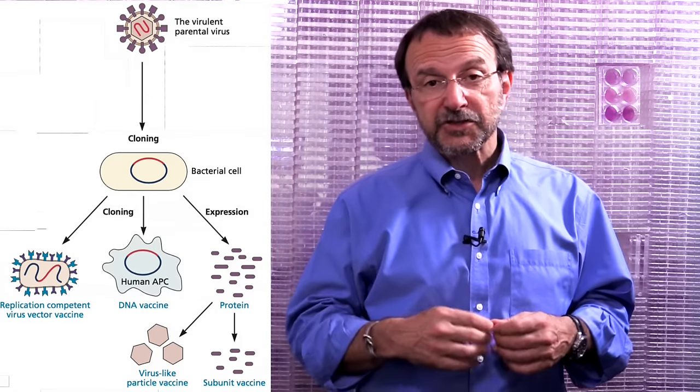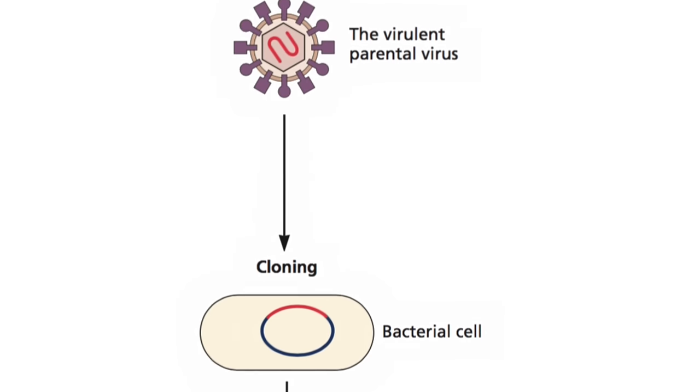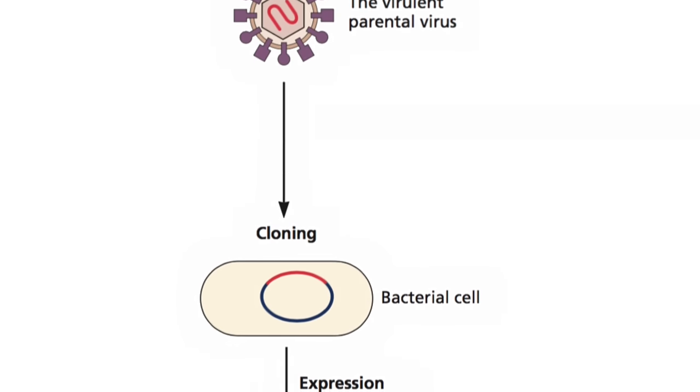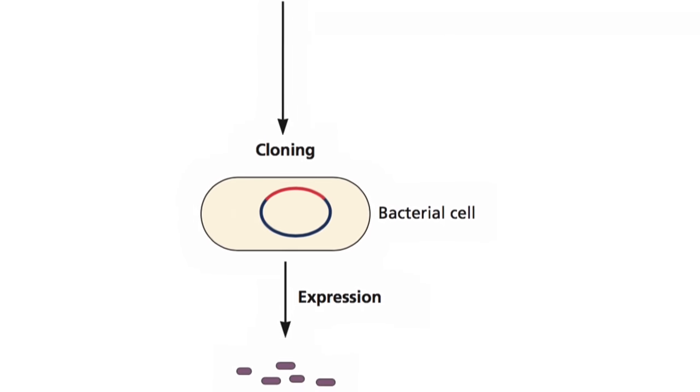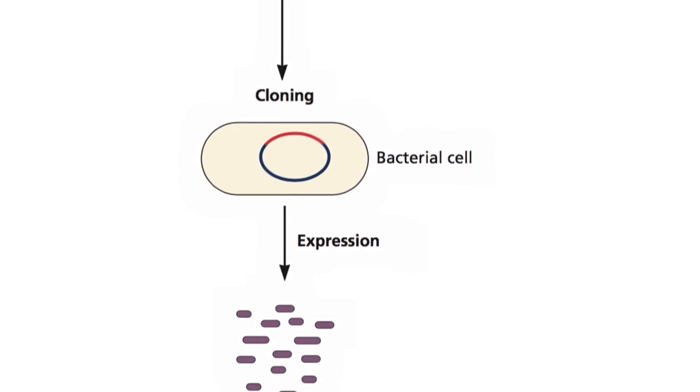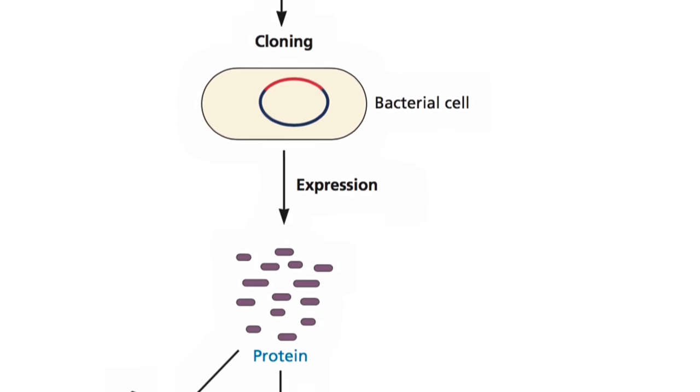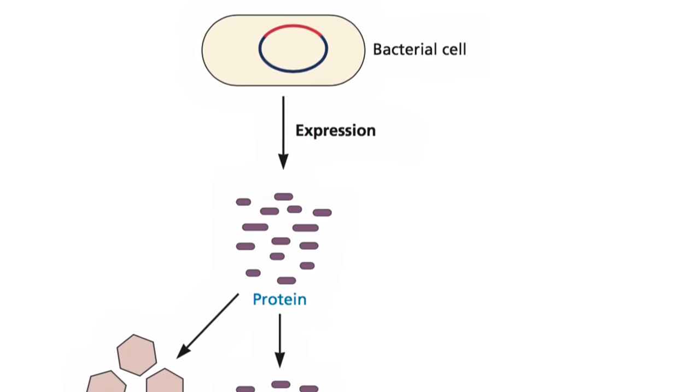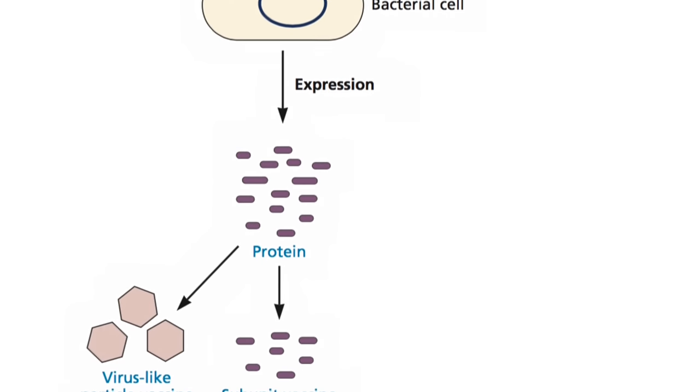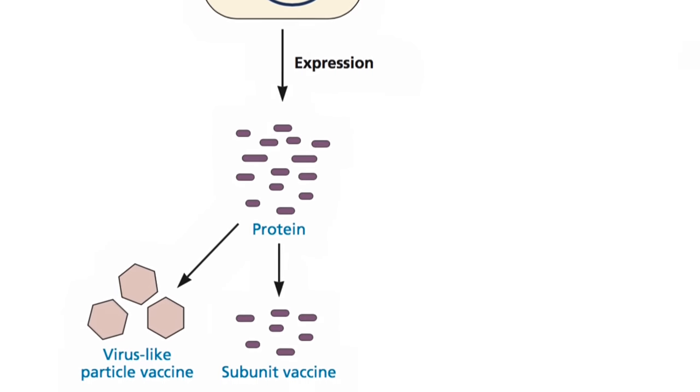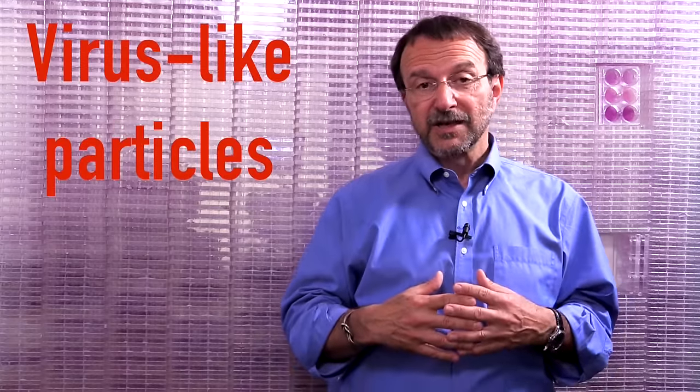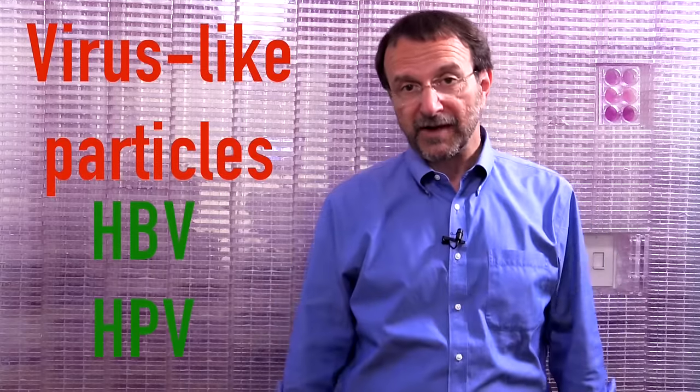In one example, a gene encoding a viral protein is cloned into a vector, and then it's expressed in bacteria, yeast, or insect cells. The proteins that are made can be purified and then injected as a vaccine. Often, these proteins assemble into non-infectious virus-like particles, as is the case for the vaccines for hepatitis B virus and human papillomaviruses.